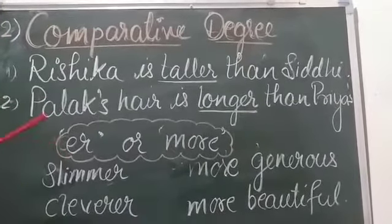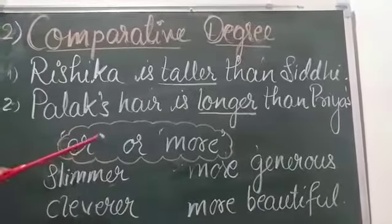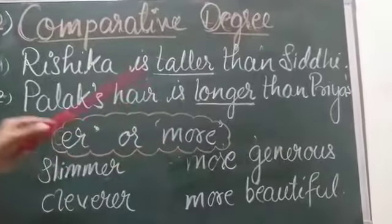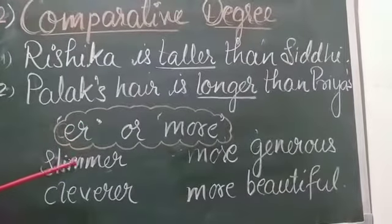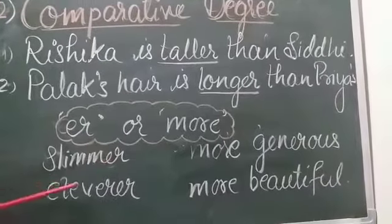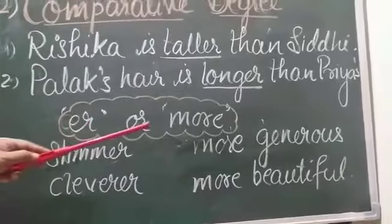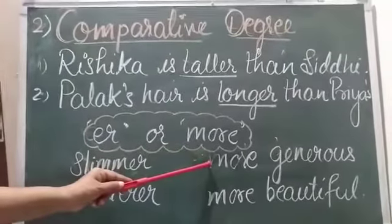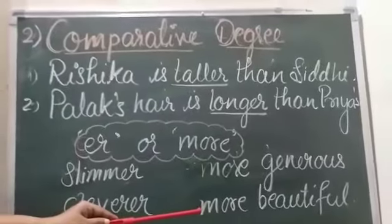To form comparative degree, we can use ER or more. When we add ER to an adjective, it becomes slimmer, cleverer. Similarly, when we add more, it becomes more generous and more beautiful.